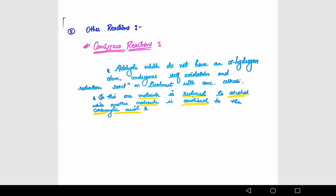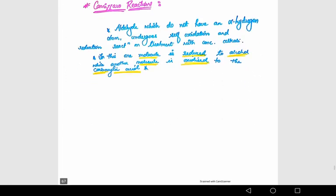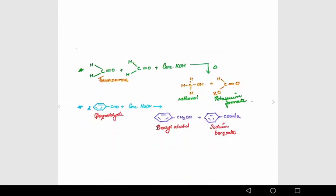Treatment with concentrated alkali. In this, one molecule is reduced to alcohol, and another molecule is oxidized to carboxylic acid. For example, formaldehyde with concentrated alcoholic KOH when heated forms potassium formate and methanol.